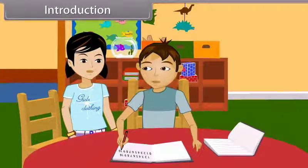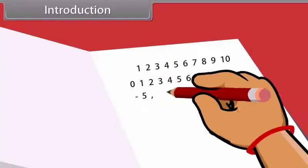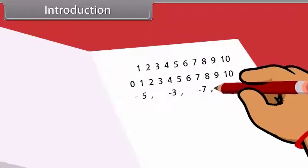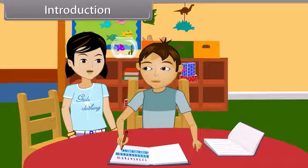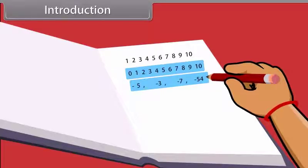These are whole numbers now. And what are these? Negative numbers. Yes, these are negative numbers. And the collection of all these numbers is called integers.